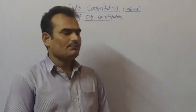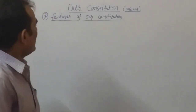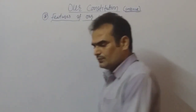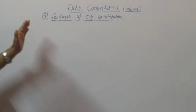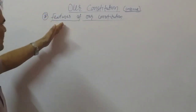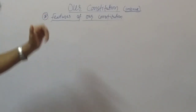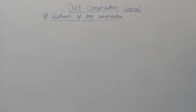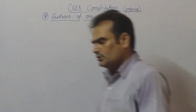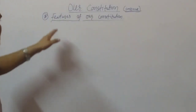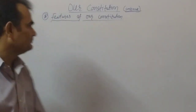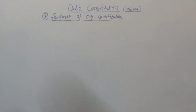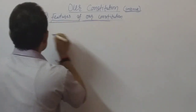Hi everyone, today we have discussed our constitution — the continuing part of it. In the last video we discussed some points: the preamble, sources of constitutions, nature of state, and the objectives of the constitution. Today we discuss the features of our constitution.